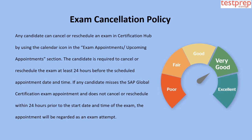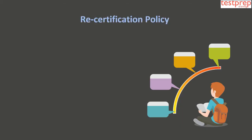Any candidate can cancel or reschedule an exam in the Certification Hub using the calendar icon in the Exam Appointments or Upcoming Appointments section. The candidate must cancel or reschedule at least 24 hours before the scheduled appointment. If a candidate misses the exam and does not cancel or reschedule within 24 hours prior, the appointment will be regarded as an exam attempt.